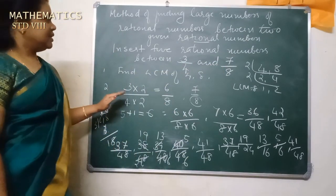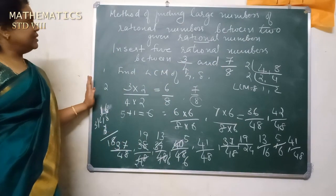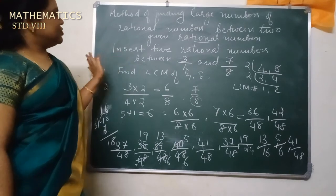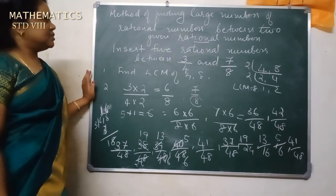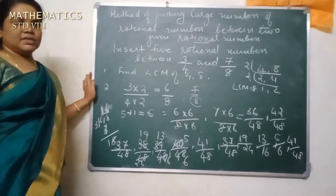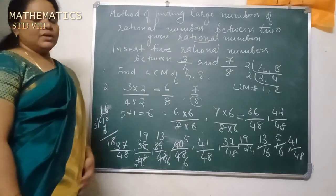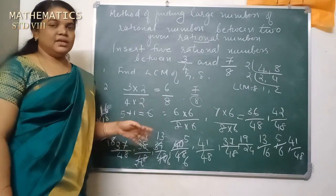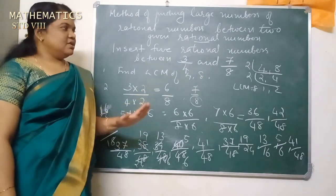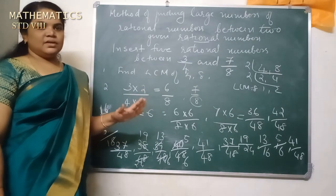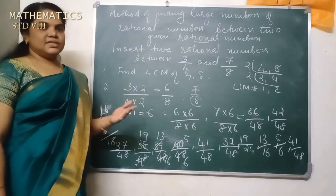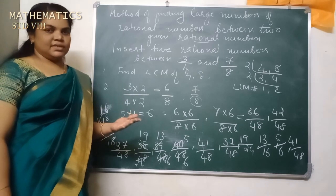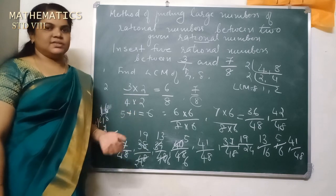This is the method to find a large number of rational numbers between two given rational numbers. I hope you understood this lesson. This is the end of this lesson. In the next class, we will move on to the second lesson, that is, exponents. Thank you.